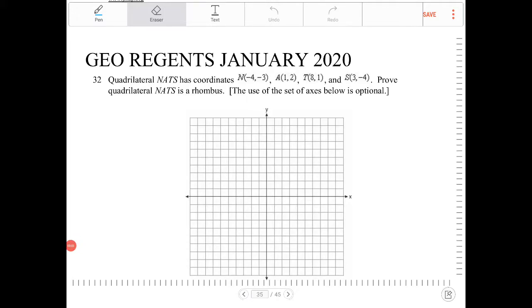Quadrilateral M-A-T-S has coordinates given by that. Prove quadrilateral N-A-T-S is a rhombus. Okay, so to prove a quadrilateral is a rhombus, there are a couple of different ways you can approach this.